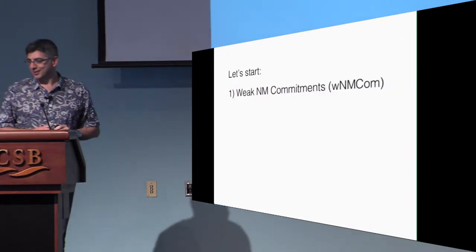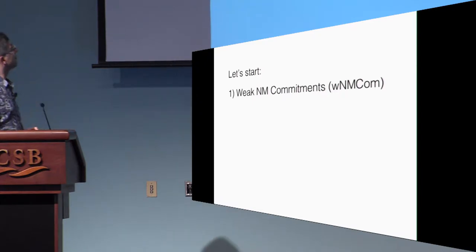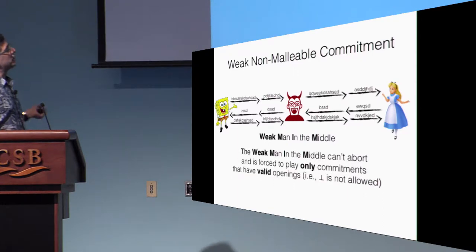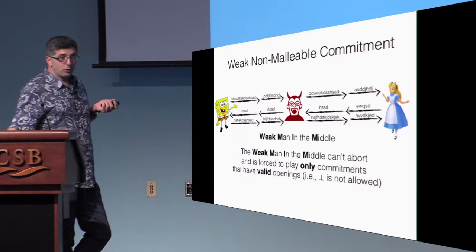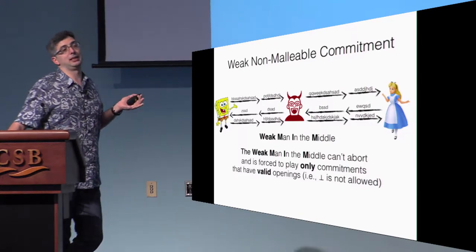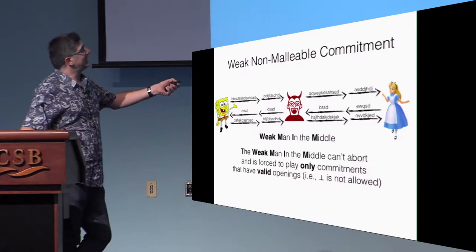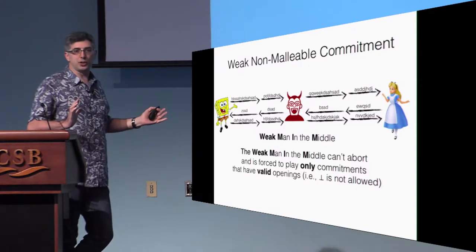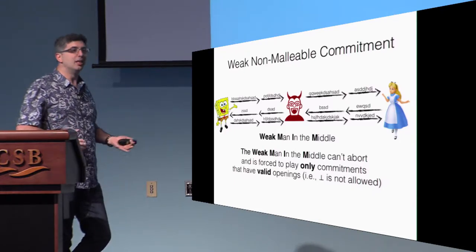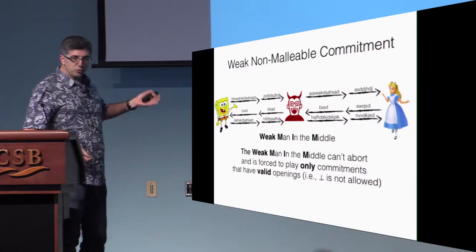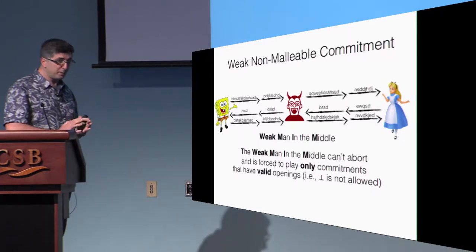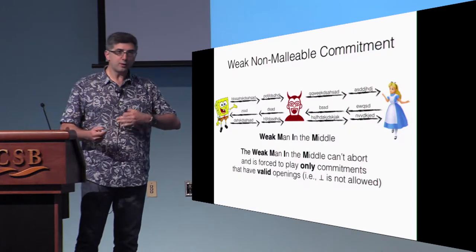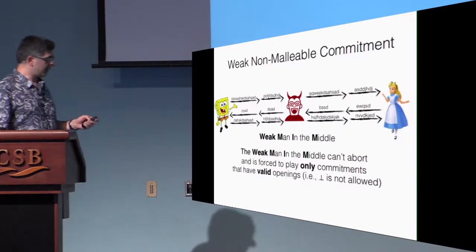Let's start with the sequence of results, beginning with weak non-malleability. In this notion, the man-in-the-middle is forced to commit to a message that can be successfully opened later — it cannot send bogus messages. You might ask why have this restriction if in the real world you can do whatever you want. The answer is: my goal is to use this as a building block to construct full-fledged non-malleability, and it's easier to achieve under different assumptions and constructions and then build on top of it.